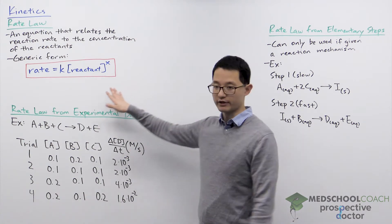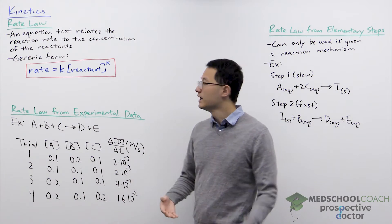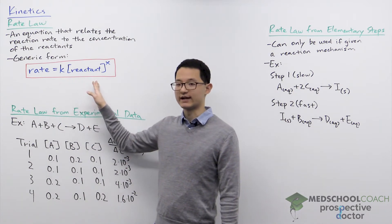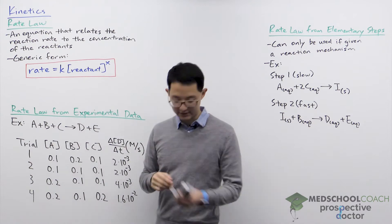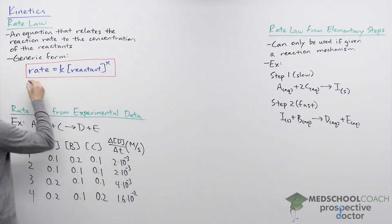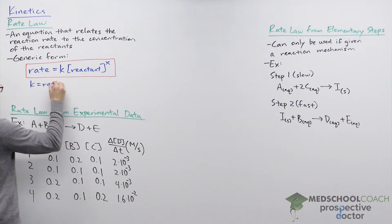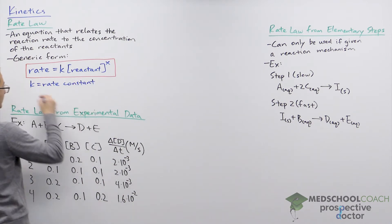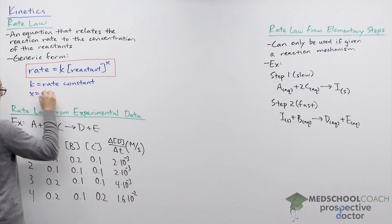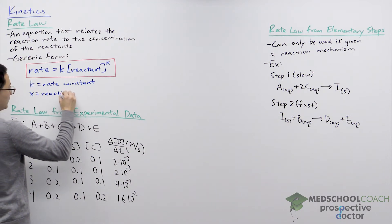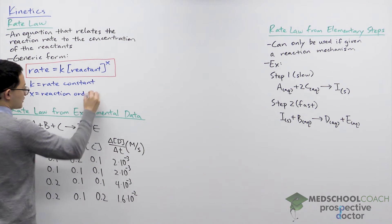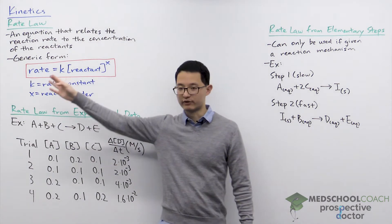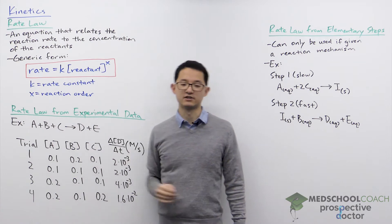The form of the rate law is always the same. You always have K times the concentration of reactants to some exponent. The lowercase k is called the rate constant. X is the reaction order, and this gives us more detail as to how the rate of the reaction depends on the reactant concentration.